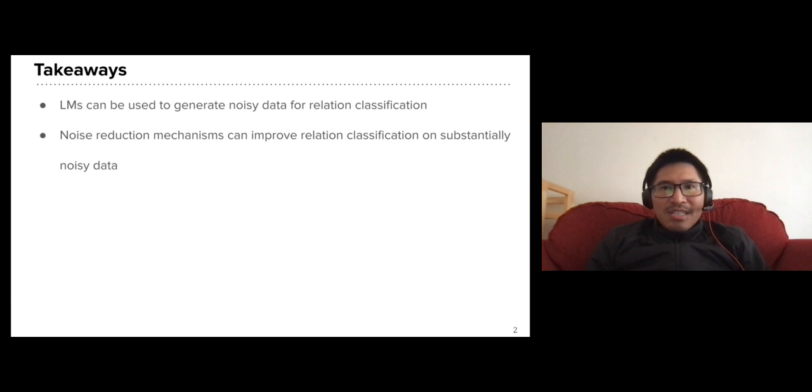Firstly, we demonstrate that language models, such as BERT, can be used to generate noisy data for relation classification in one-shot fashion. Secondly, we show that our two noise reduction mechanisms can mitigate the bad effect of the noisy annotated data.